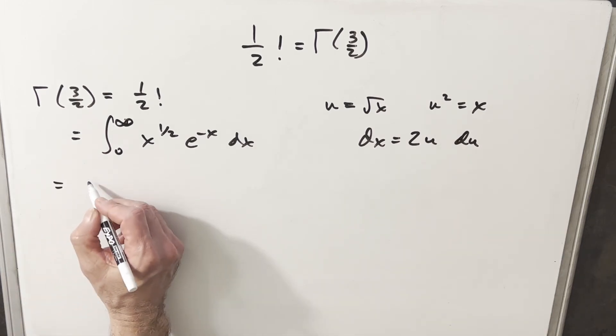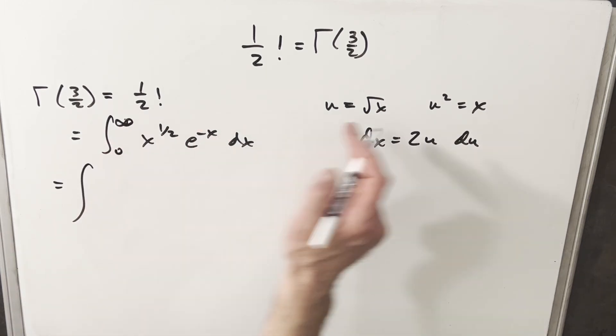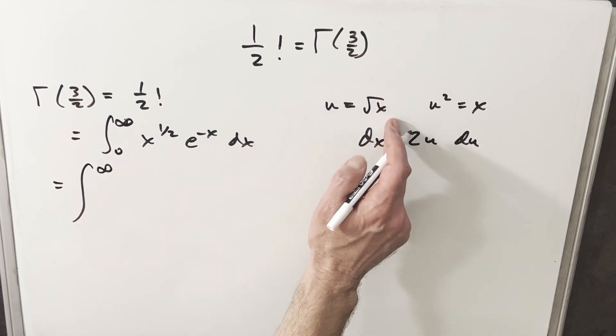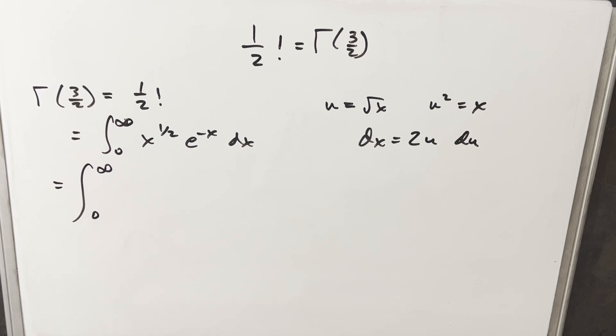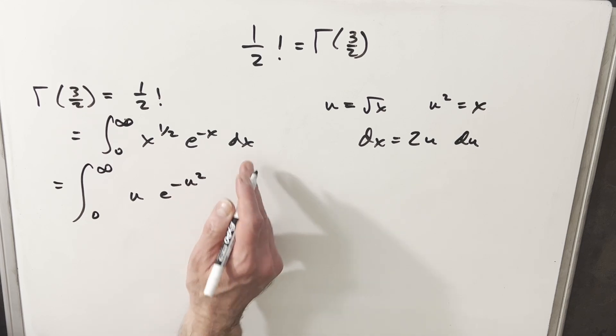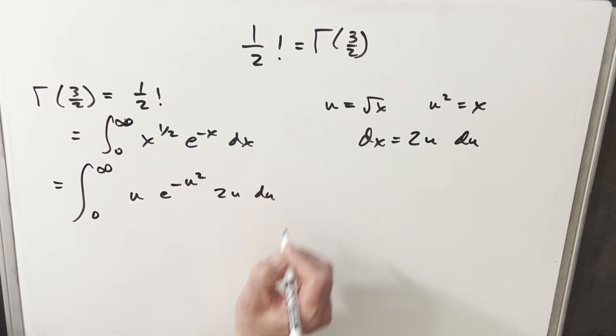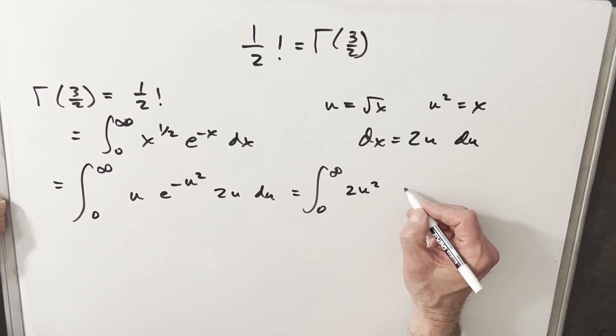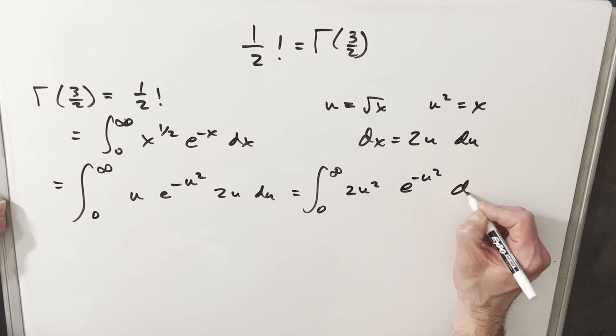Let's just go ahead and substitute. So we'll plug in, take an infinity and plug in square root of infinity is infinity. Square root of zero here is just going to give us a zero. Square root of x is going to be u. We're going to have e to the minus u squared. And then our dx is just going to be this 2u du. We'll just multiply the 2u times the u and we have 2u squared e to the minus u squared du.